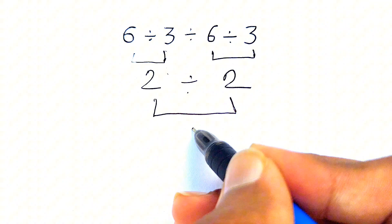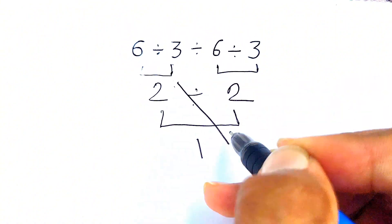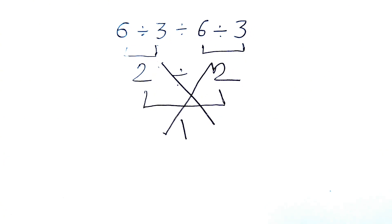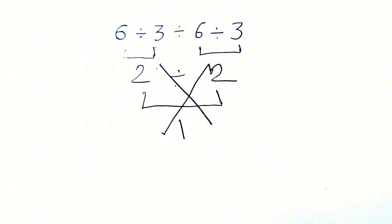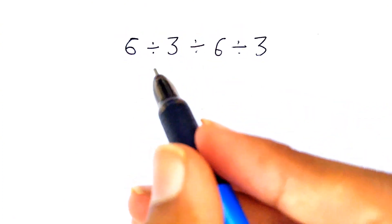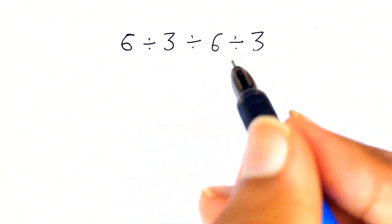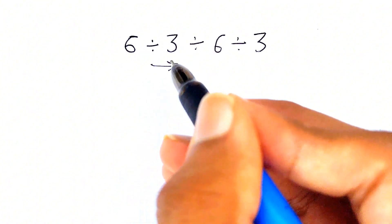But this is a very wrong answer because here we have not followed the order of operations. Let's see how we can do this properly. As we can see in this expression, we have three division signs. It means all the signs are the same, so we need to go from left to right.